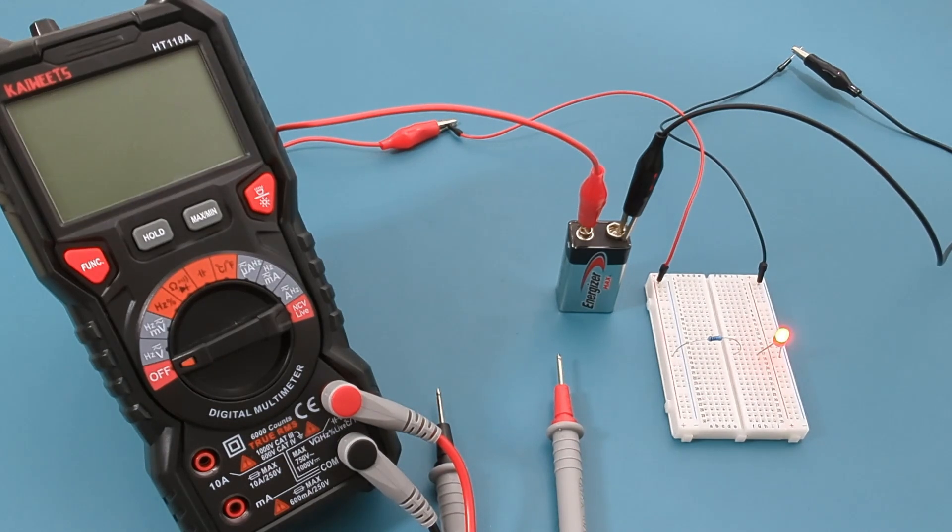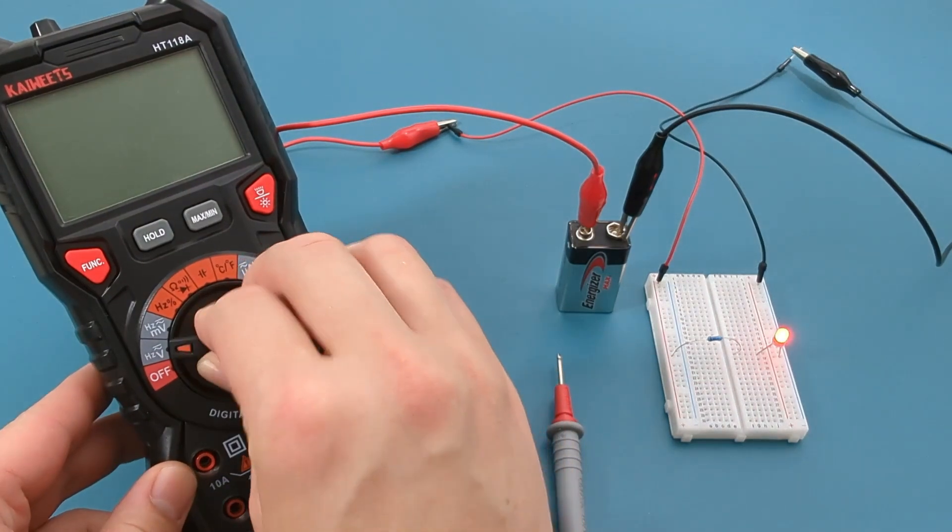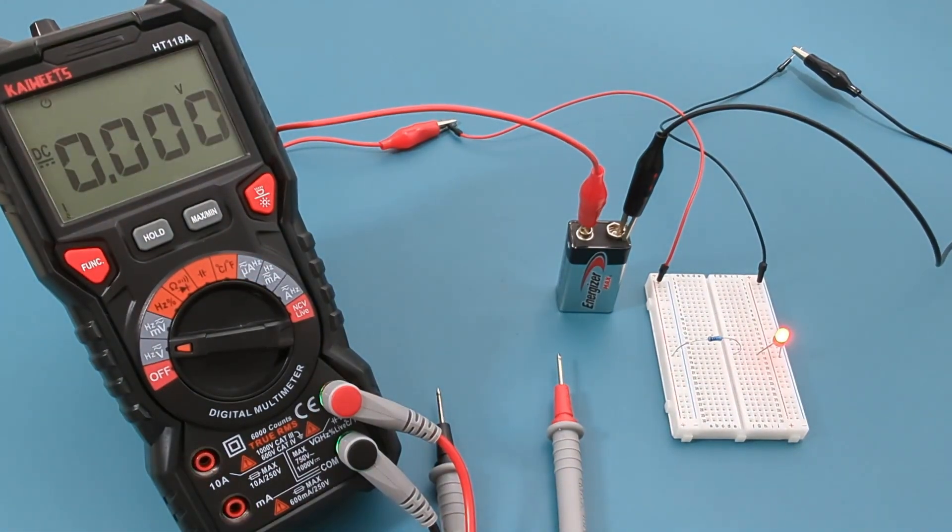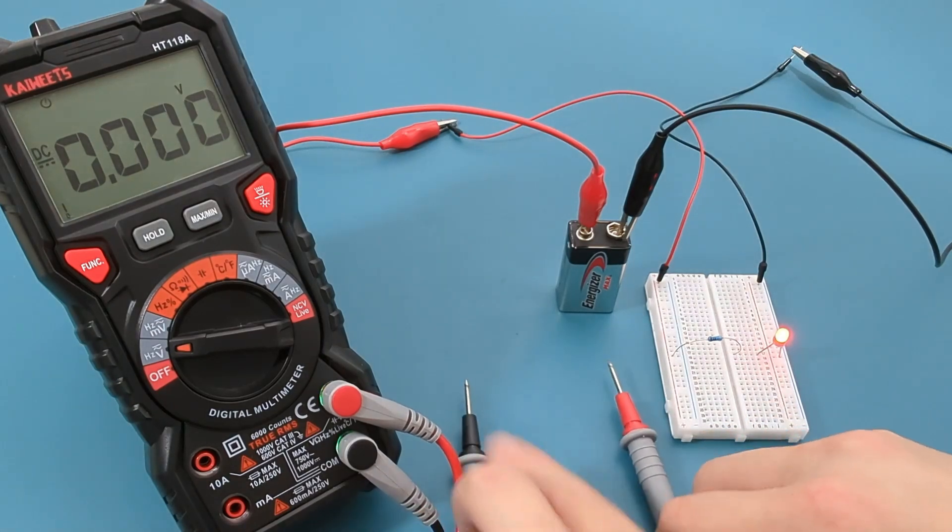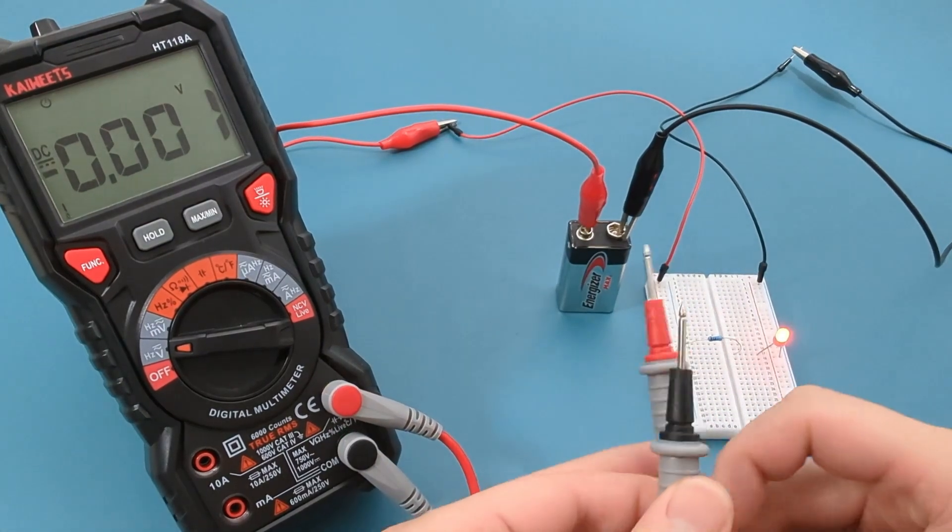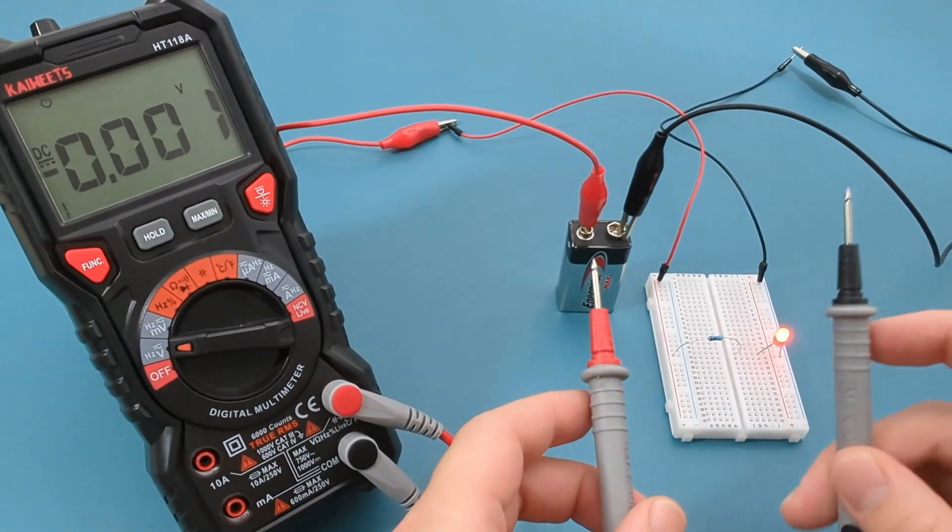Let's verify the voltage by using a multimeter. Turn the dial to the voltage setting. Touch the red probe to the left side and the black probe to the right side of the resistor.